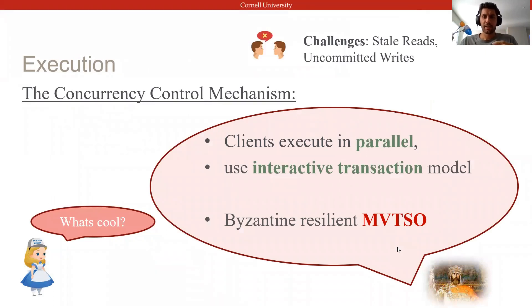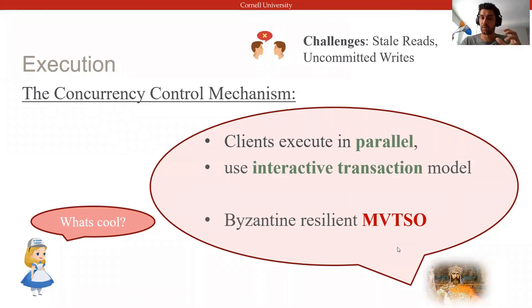In Basel, clients use an interactive transaction model and speculatively execute transactions in parallel. We extend, to a replicated Byzantine setting, a multi-version timestamp ordering (MVTO) protocol — a sophisticated standard database concurrency control mechanism that assigns transaction serialization order a priori and allows optimistic reads of uncommitted data.